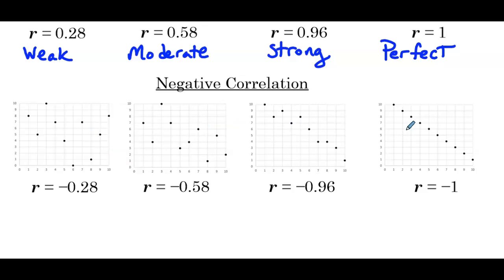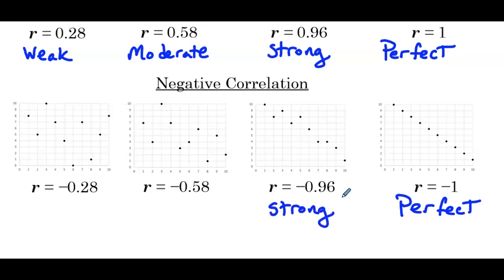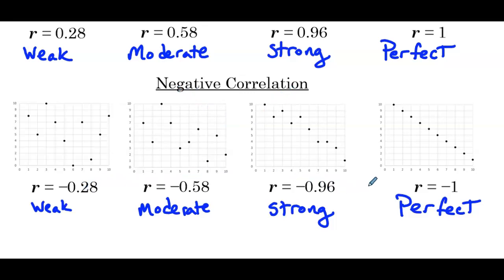We have four more scatter plots, and the correlation coefficients written beneath are the same values as before, just negative. So this would be perfect negative correlation, this would be strong negative correlation, moderate negative correlation, and weak negative correlation. All four of these, if we were to draw in the line of best fit, each line would have a negative slope. So a negative slope for the line of best fit means we have negative correlation, and how close the correlation coefficient is to negative 1 tells us how weak or strong that linear relationship is.